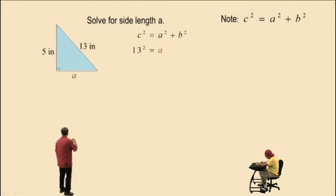And this is equal to a squared plus our other leg, which is 5 inches in length. And we'll replace that with b, or replace b with that. And we square that. Now, 13 squared, 13 times 13 is 169, equals a squared plus 5 squared is 25.